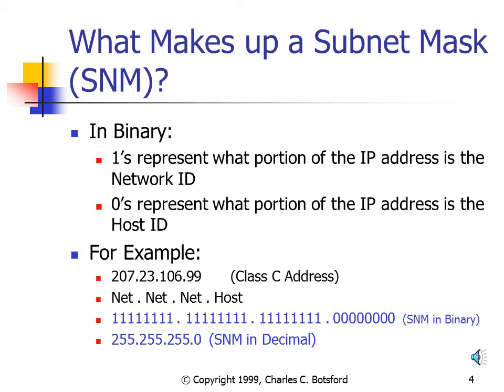For example, take the address 207.23.106.99. We know this is a Class C address because the first number, 207, is in the Class C range. The subnet mask would be set to all ones in the first, second, and third octets — because according to Class C specification, the entire first three octets are the network ID. The last octet would be set to zeros to indicate that portion of the associated IP address is the host ID.